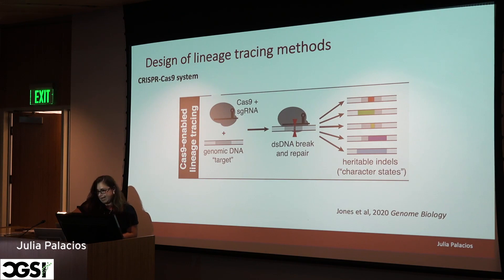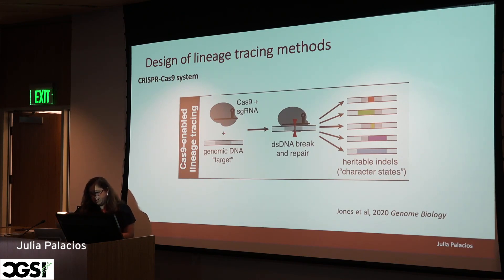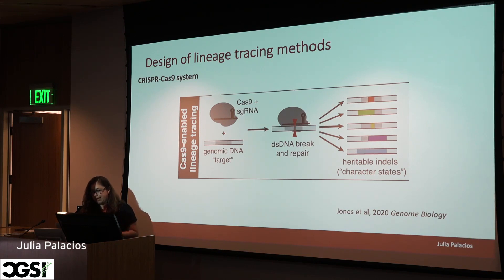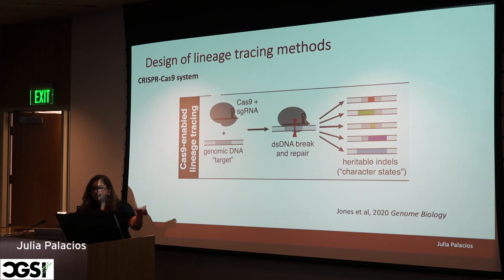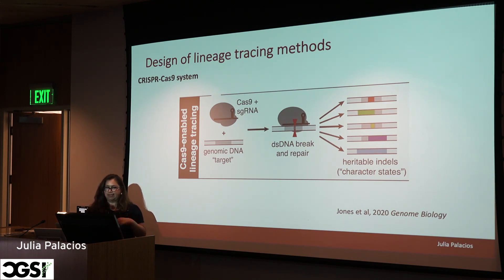The design of CRISPR-Cas9 lineage tracing methods involves three components: Cas9 nuclease, DNA target sites that are integrated into the genome, and a single guide RNA that specifically targets Cas9 to the target sites, creating heritable changes — heritable indels that evolve.